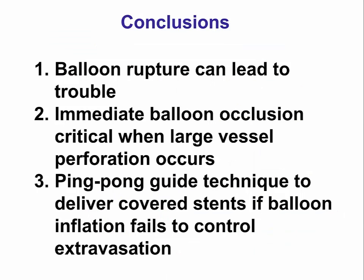In summary, balloon rupture can cause vessel perforation. When main vessel perforation occurs, the very first step is to inflate a balloon to minimize bleeding into the pericardium. The next step is to perform pericardiocentesis if there is tamponade, followed by delivery of a covered stent if extravasation does not stop after prolonged balloon inflation. The best approach is the ping-pong guide technique, in which a second guide is advanced alongside the first, a second wire is advanced through the lesion, and the covered stent is delivered through the second guide catheter—minimizing the time that extravasation continues into the pericardium. Thank you.